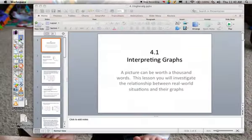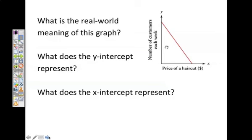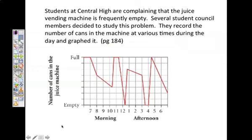Let's look at the next problem. Students at Central High are complaining that the juice vending machine is frequently empty. Several student council members decided to study this problem. They record the number of cans in the machine at various times during the day and they graphed it. Here it's full in the morning, goes down, and so on. We're going to interpret this graph.